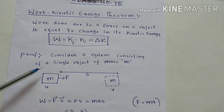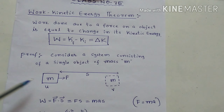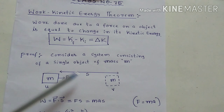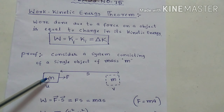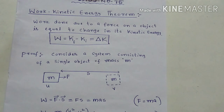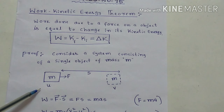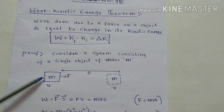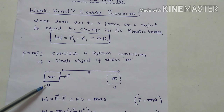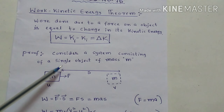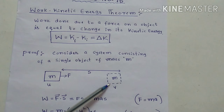Considering a system consisting of a single object of mass m — you see here one mass is there. One force F is applied on this mass along this direction; because of the force this object accelerates along this direction and it travels a displacement s from here to here. Assume initially this object was moving with initial velocity u, so it has some initial kinetic energy Ki. Then because of the force it accelerates and its velocity changes from u to v, where v is the final velocity after displacement s.